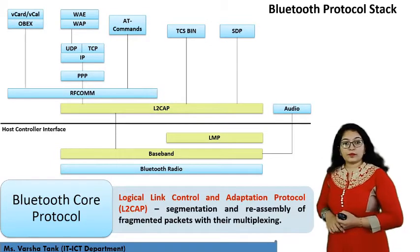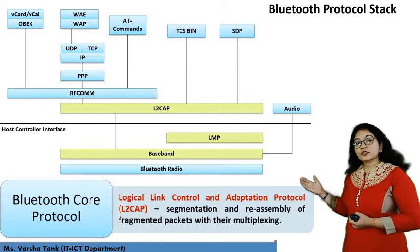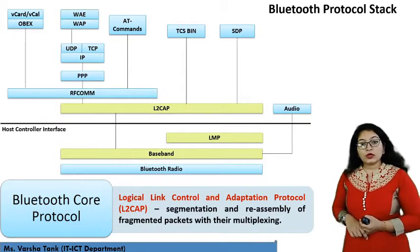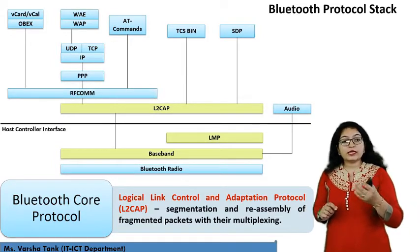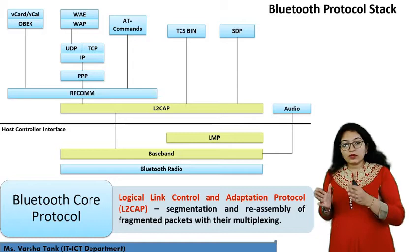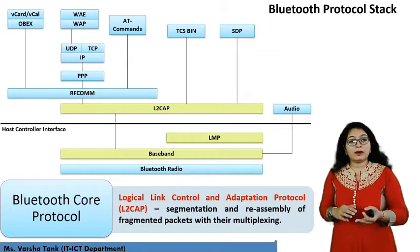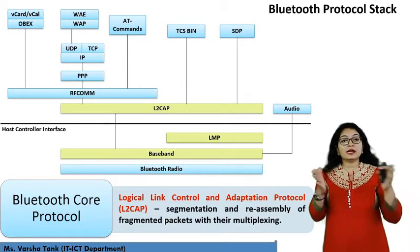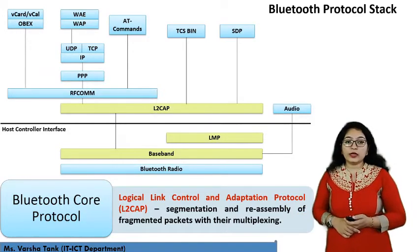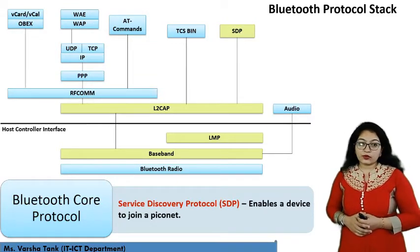L2CAP stands for Logical Link Control and Adaptation Protocol. It is responsible for segmentation and reassembly of fragmented packets with multiplexing support. When transmitting data over Bluetooth, the data is divided into parts — that is segmentation — and recovered at the receiver side — that is reassembly.